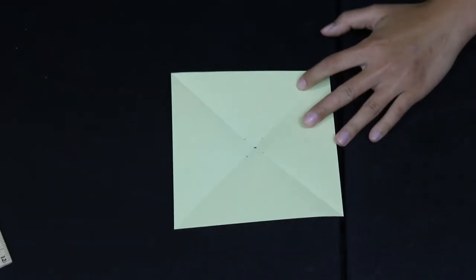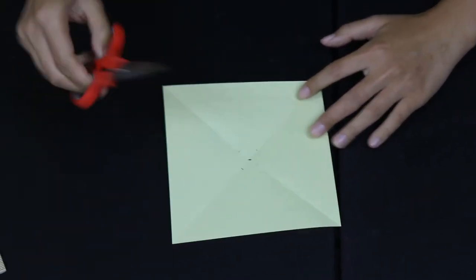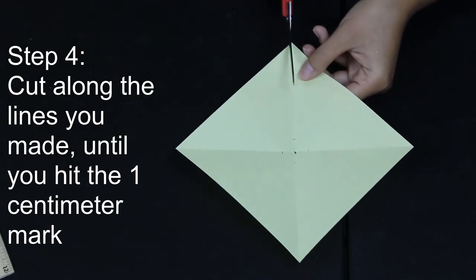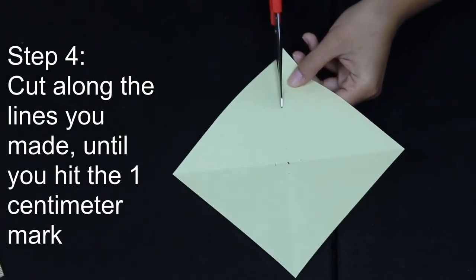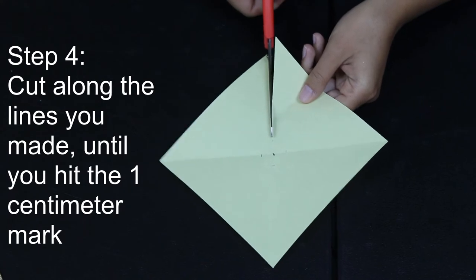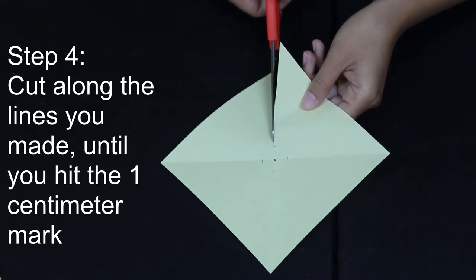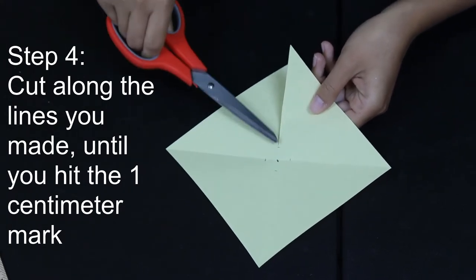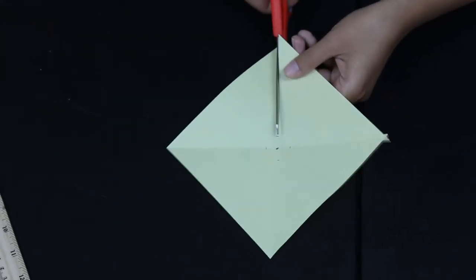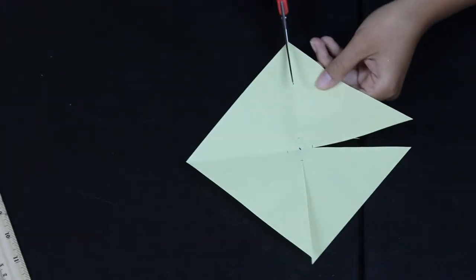Once you measure those one centimeter marks you're going to take your scissors and cut along the X toward the dots, stopping when you hit the one centimeter mark. We're not going to cut all the way into the center. Do that for all four edges.